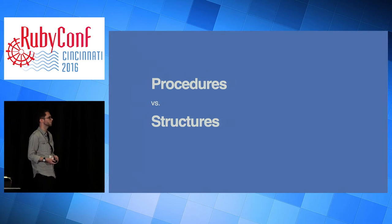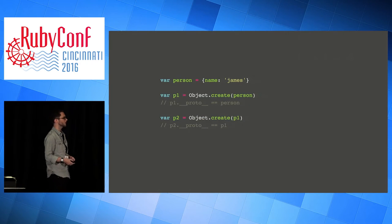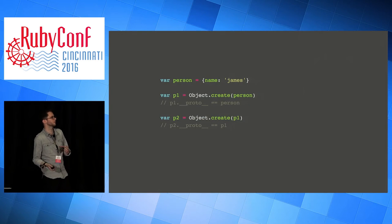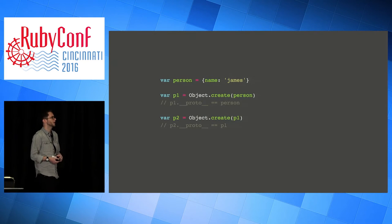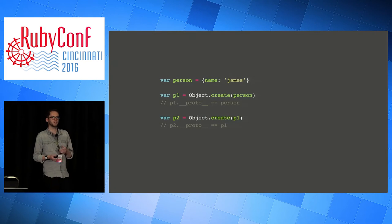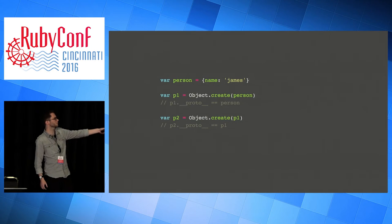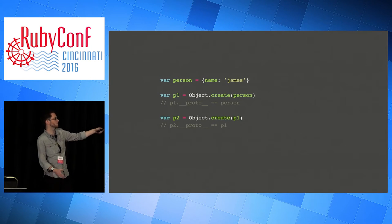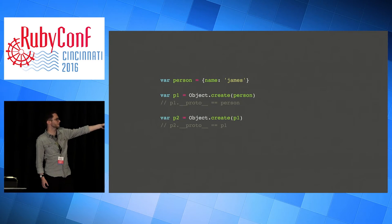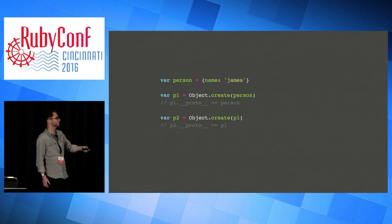I'd like us to focus more on those structures and what they can do. So by way of a brief example, in JavaScript the way that inheritance works is that every object has this special field on it called proto. So when you make an object and you call Object.create, that's saying make me a new object that inherits from this one. All that means is that it sets this special field called proto to the thing you've inherited from, and you can make chains of those things.